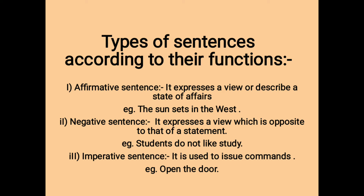Number one: the affirmative sentence, also called a statement. It expresses a view or describes a state of affairs. For example, 'The sun sets in the west.' The second type is the negative sentence. It expresses a view which is opposite to that of a statement. For example, 'Students do not like to study.'